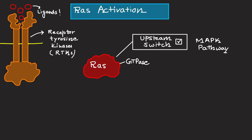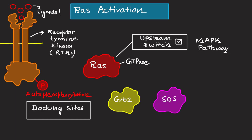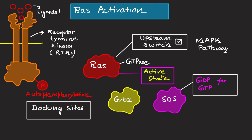RTKs are activated by various ligand molecules including growth factors, hormones, and cytokines. When the ligand binds to these RTKs, they undergo autophosphorylation, creating docking sites for adapter proteins GRB2 and SOS. Specifically, SOS facilitates the exchange of GDP for GTP on RAS, converting it into its active state.